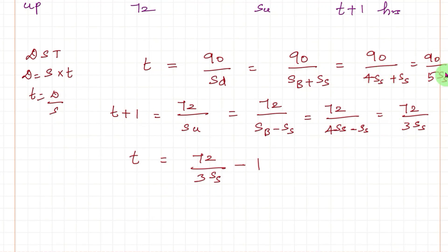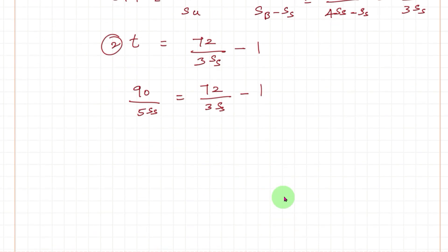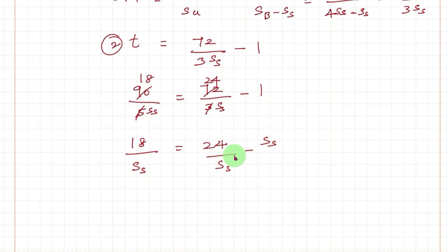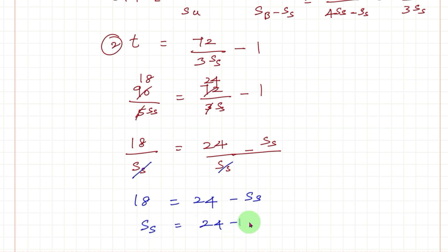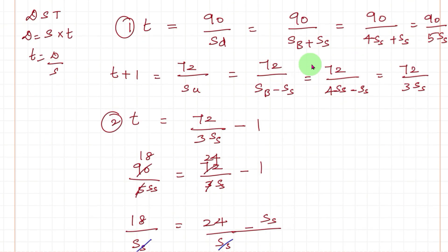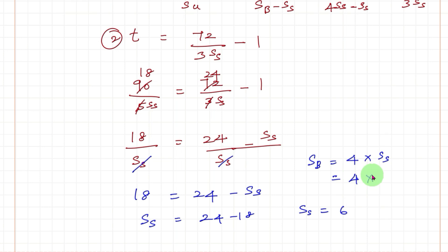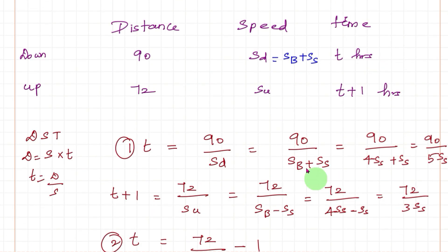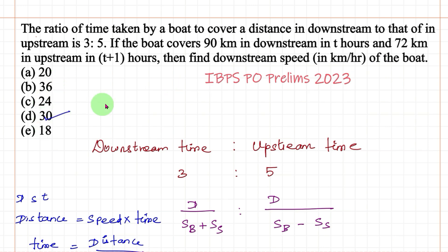Equating the two T expressions: 90 divided by 5SS equals 72 divided by 3SS minus 1. Simplifying: 18 divided by SS equals 24 divided by SS minus SS, so 18 equals 24 minus SS, giving SS equals 6. Therefore downstream speed equals speed of the boat plus speed of the stream equals 4 times 6 plus 6 equals 24 plus 6 equals 30 km/h. Therefore the downstream speed of the boat is 30 km per hour.